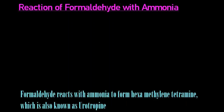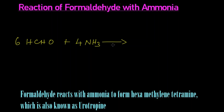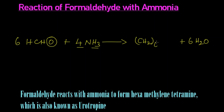In this video we are going to learn the reaction of formaldehyde with ammonia. We react six formaldehyde (6 HCHO) with four molecules of ammonia (4 NH3). The six oxygen and twelve hydrogen get eliminated as six H2O — six water molecules are released. The remaining six CH2 groups are there, and four nitrogen are remaining, so they get attached. This is called hexamethylene tetramine.